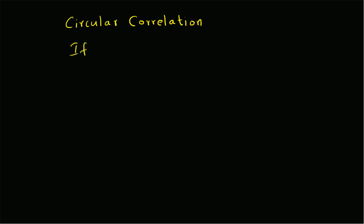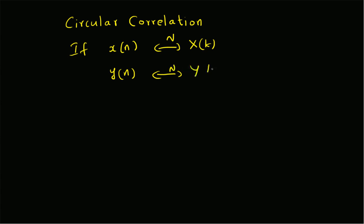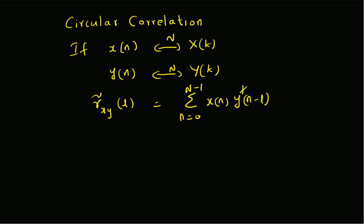So, if an N-point sequence x of n has the DFT X of k, and another N-point sequence y of n has the corresponding DFT Y of k, then the circular correlation is defined as r̃_xy of l equal to summation n equals 0 to N minus 1 of x of n multiplied by y of n minus l mod N, conjugate. That is the definition of circular correlation.